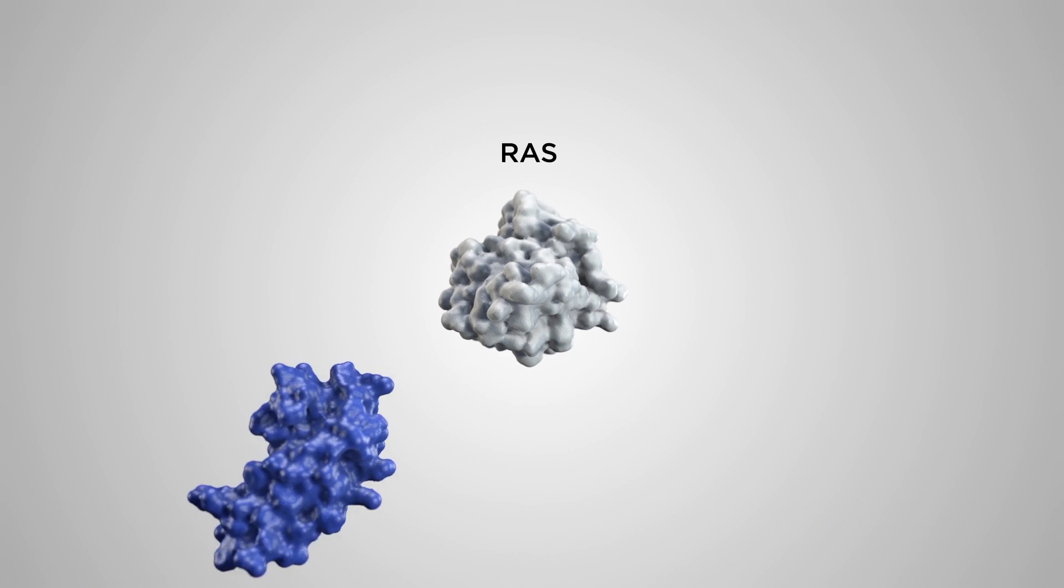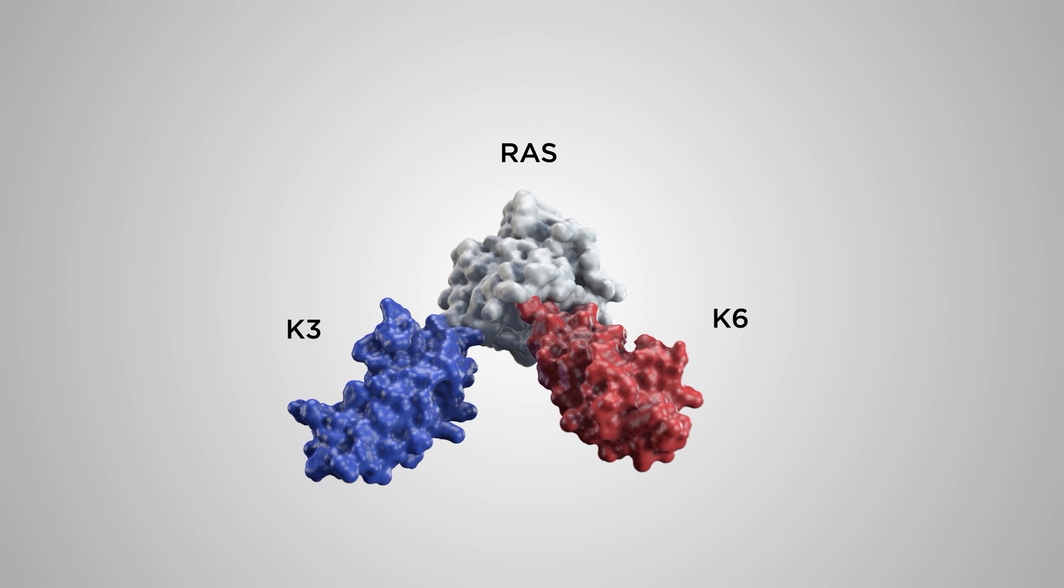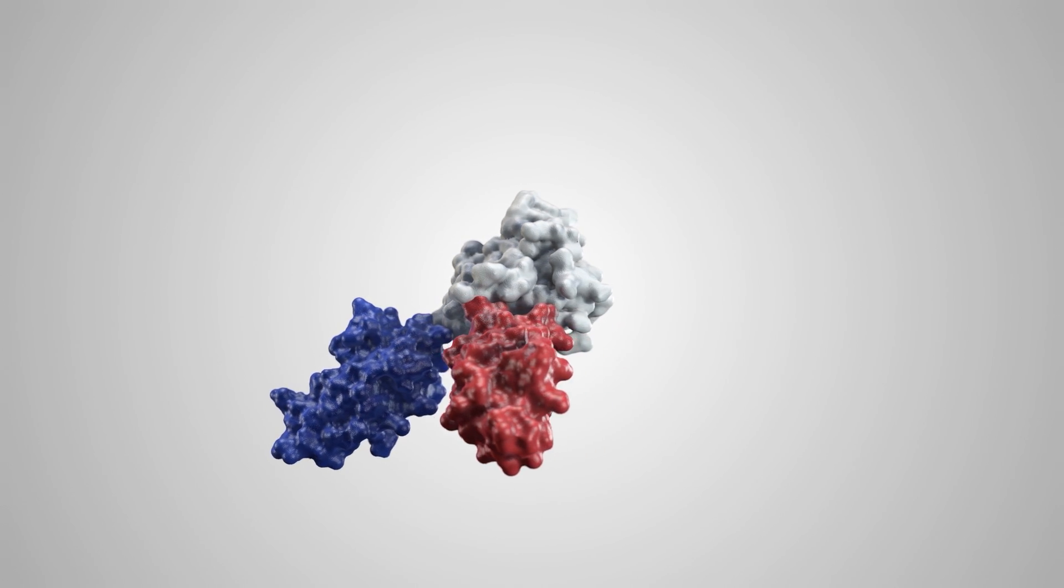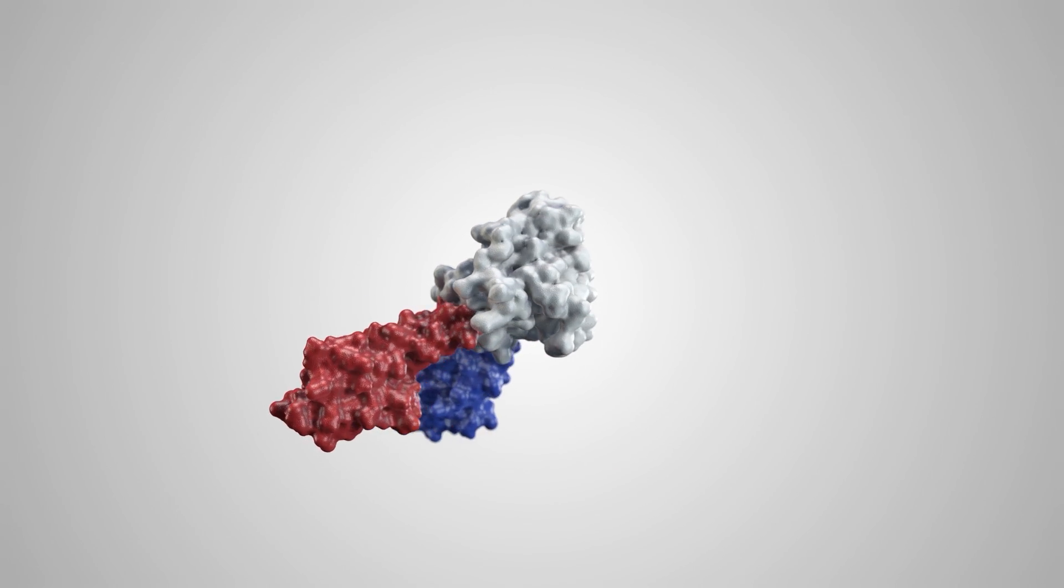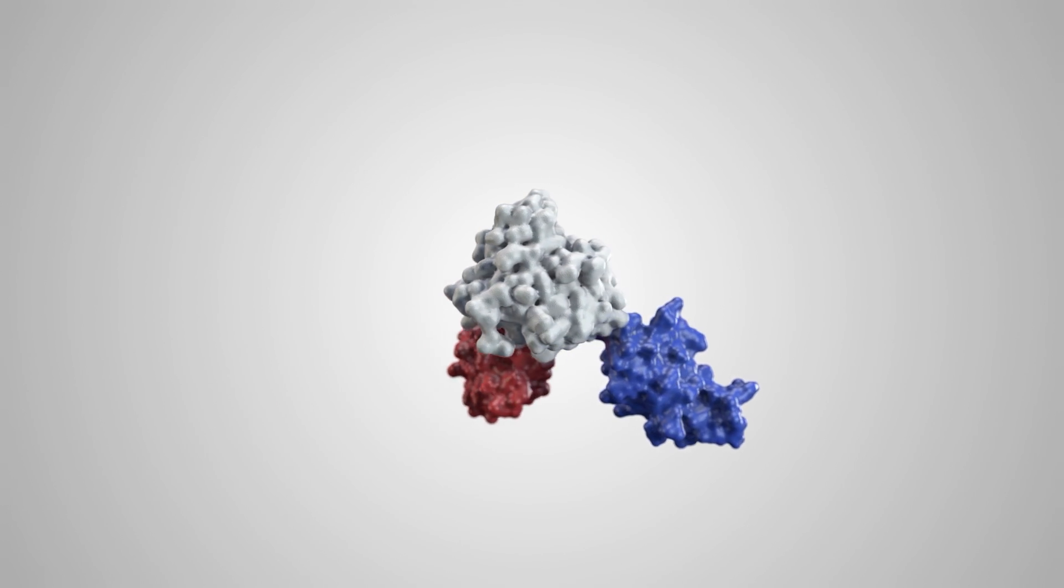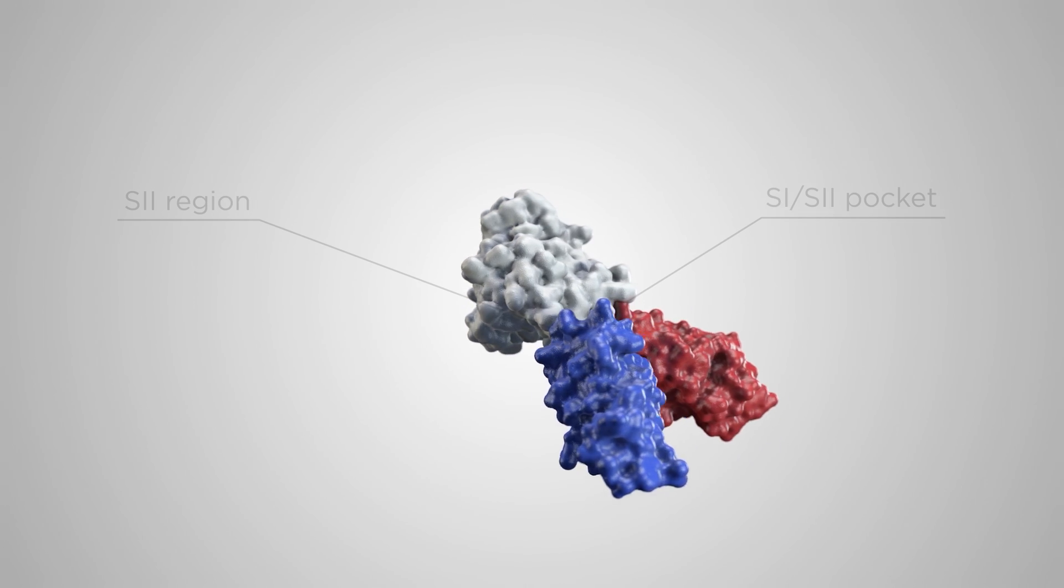Two RAS-binding Affimers, K3 and K6, can inhibit RAS function. The Affimer K6 binds the S1-S2 pocket, while K3 is the first non-covalent inhibitor of the S2 region.